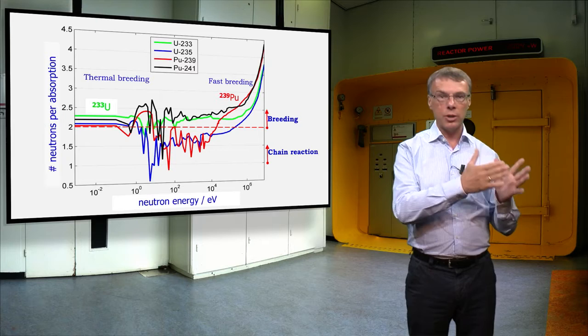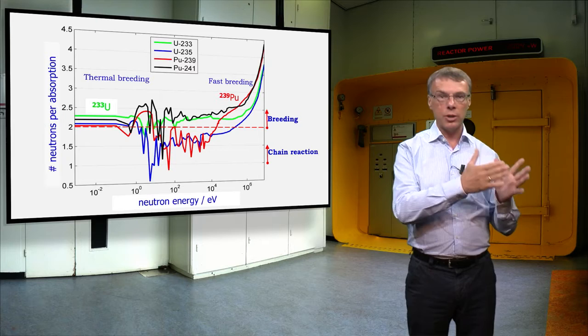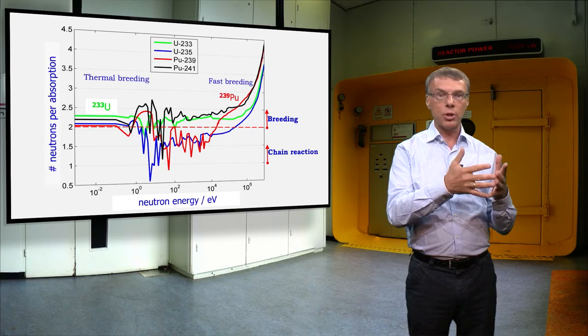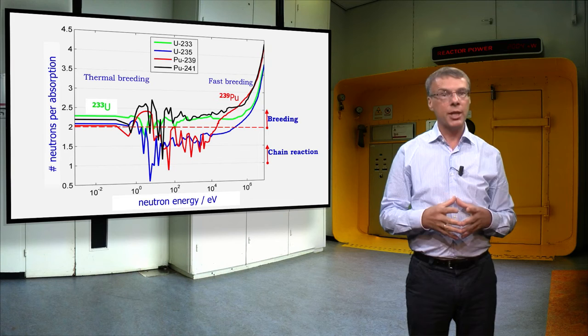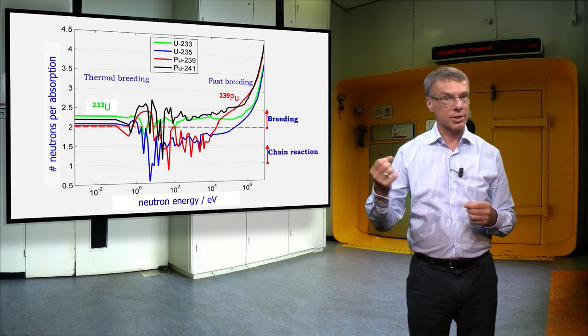If the line is above 2, there is one neutron left to convert uranium-238 into the fissile plutonium, or to convert thorium-232 into fissile uranium-233. In principle, breeding is possible then, meaning that the number of fissile isotopes in the fuel increases.